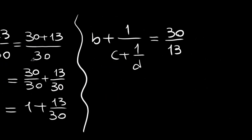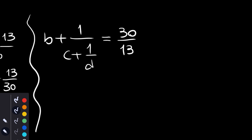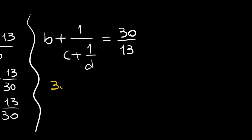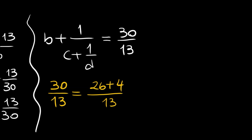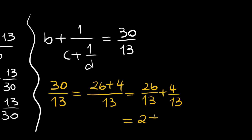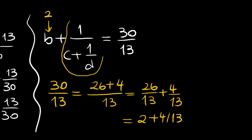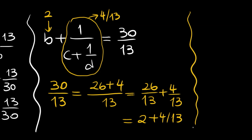Using the same trick, 30 divided by 13 equals 26 plus 4 divided by 13, since 26 is 2 times 13. So we have 26 divided by 13 plus 4 divided by 13, which equals 2 plus 4 divided by 13. Therefore b is equal to 2, and the remaining part 1 over c plus 1 over d equals 4 divided by 13.